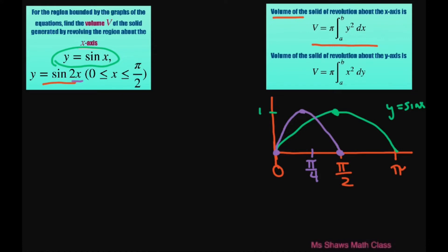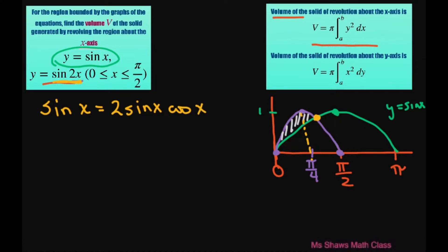What we have to do is look for this shaded region here, and we need to know what this intersection point is. It isn't pi divided by 4 because that's that one. So we're going to set these two equal to each other to find the intersection points. We have sine of x equals — and for this one I'm going to use my double angle identity — 2 sine of x cosine of x. And if I factor this, I'll subtract sine of x, giving 2 sine of x cosine of x minus sine of x.